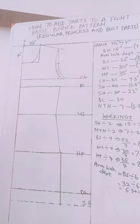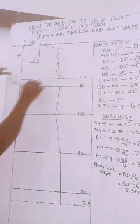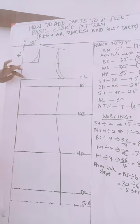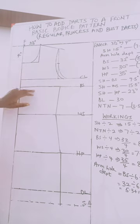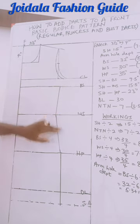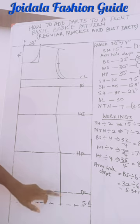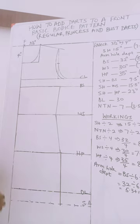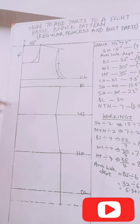So we already have our basic bodice pattern drafted out. This is our chest line, our bust line, our waist line, our hip line, the dress length, and then the seam allowance. Today we are going to be concentrating on how to add darts to the front bodice of a basic bodice pattern of a dress.